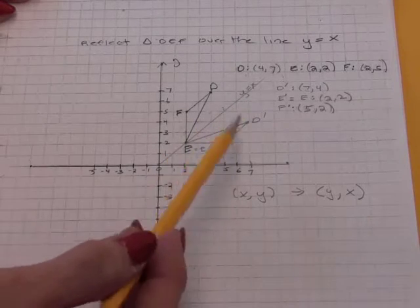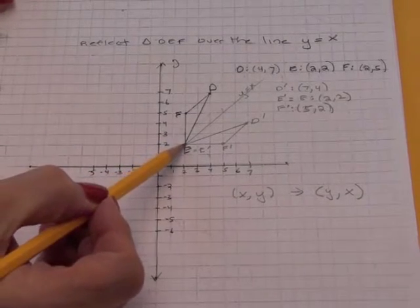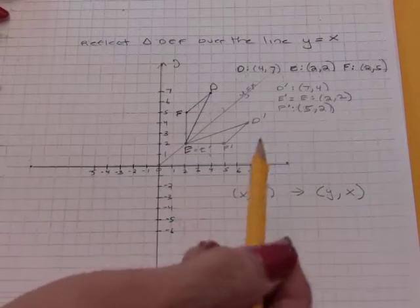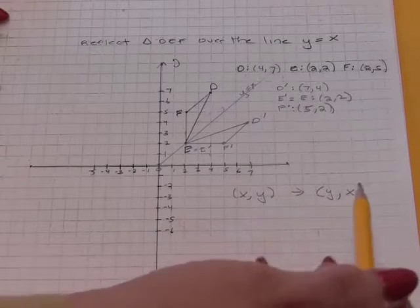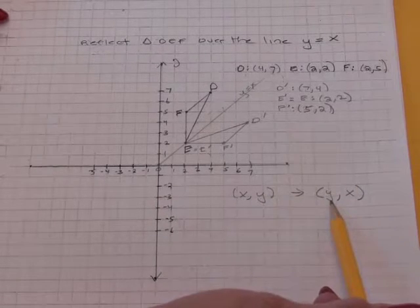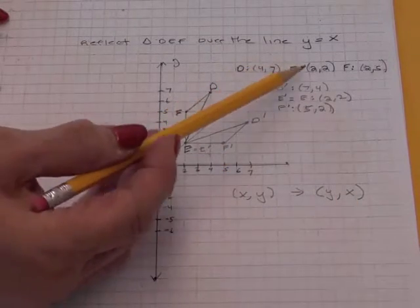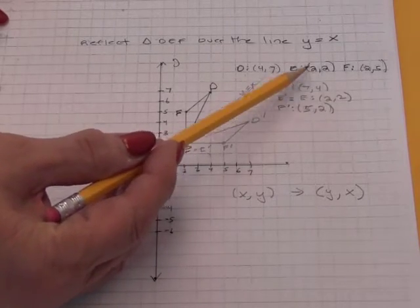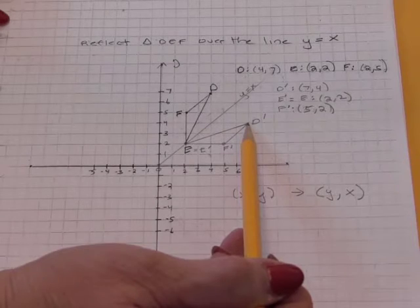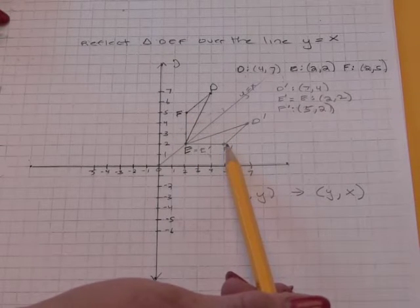Now we see the reflection: triangle D prime, E prime, F prime. Notice that E, because it had zero distance from the line Y equals X, its reflection is itself. The rule we have to follow is that every point X comma Y goes to Y comma X. Whatever was the Y coordinate becomes the X coordinate, and whatever was the X coordinate becomes the Y coordinate. This is why 2 comma 2 stays 2 comma 2. The point D at 4, 7 goes to D prime at 7, 4. The point F at 2, 5 goes to F prime at 5, 2. That is the end of Reflections.